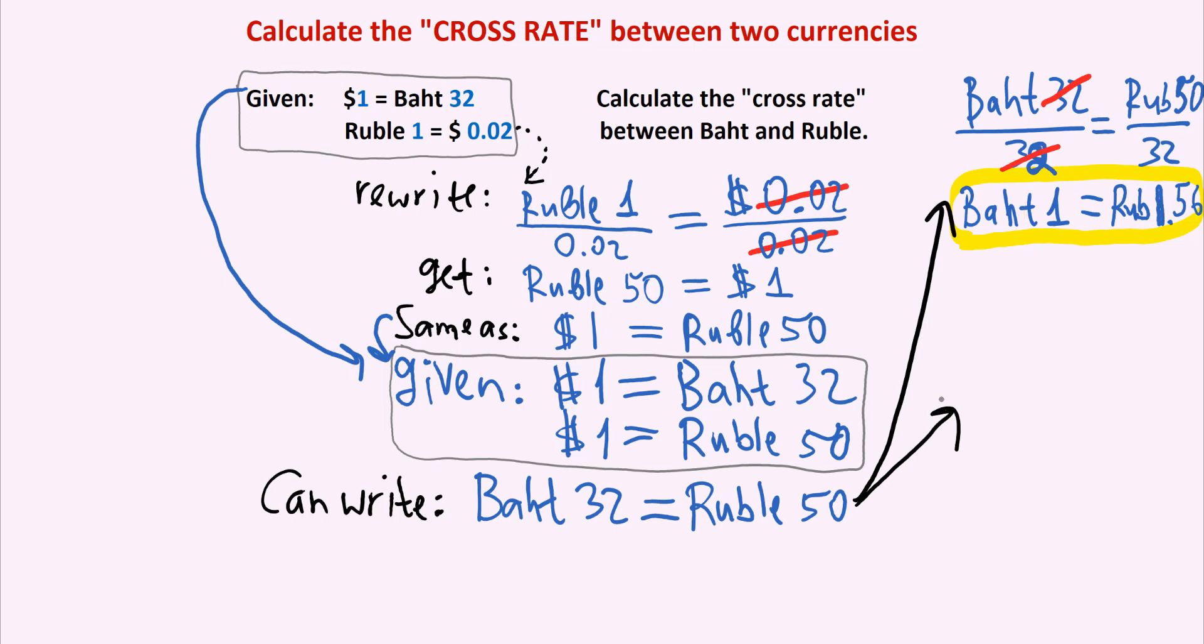And now let's see what else we could do instead. Instead, we can also divide both 32 baht and 50 rubles by 50. So we have baht 32 divided by 50 equals 50 rubles divided by 50. Again, on the ruble side, 50 in the numerator and 50 in the denominator cancel out, and we are left with, on the Thai baht side, we have 32 divided by 50, which gives 0.64. And on the Russian ruble side, we have 1, right, 1 ruble. And this here is the second way of writing the exchange rate or the cross rate between the baht and the ruble.